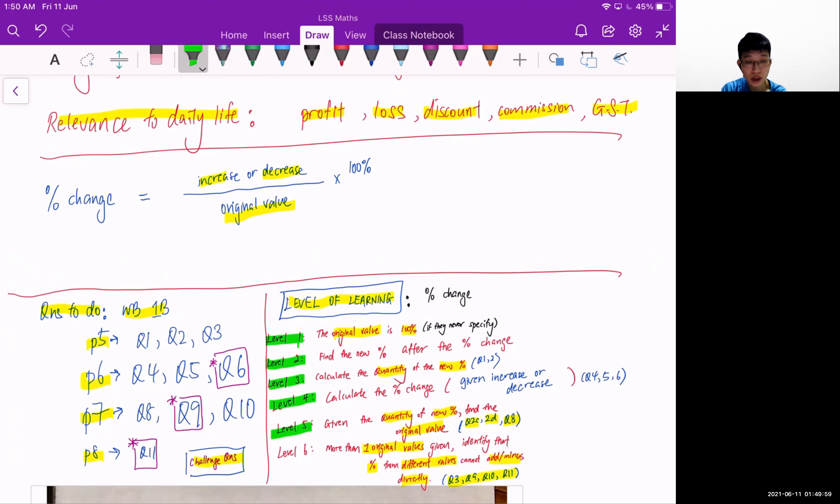To find out what is percentage change, you can use the increase or decrease in the value over the original value times 100%.